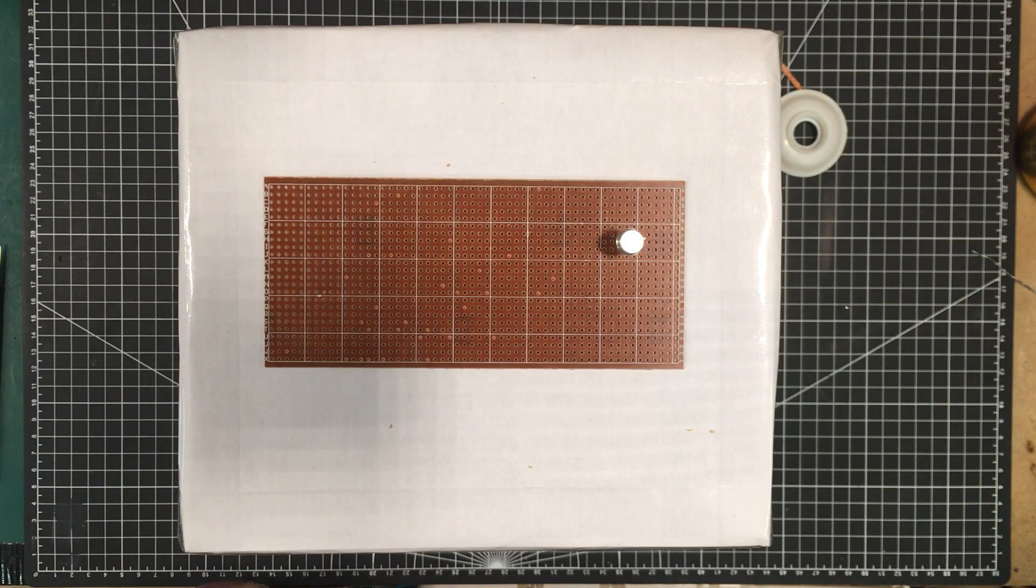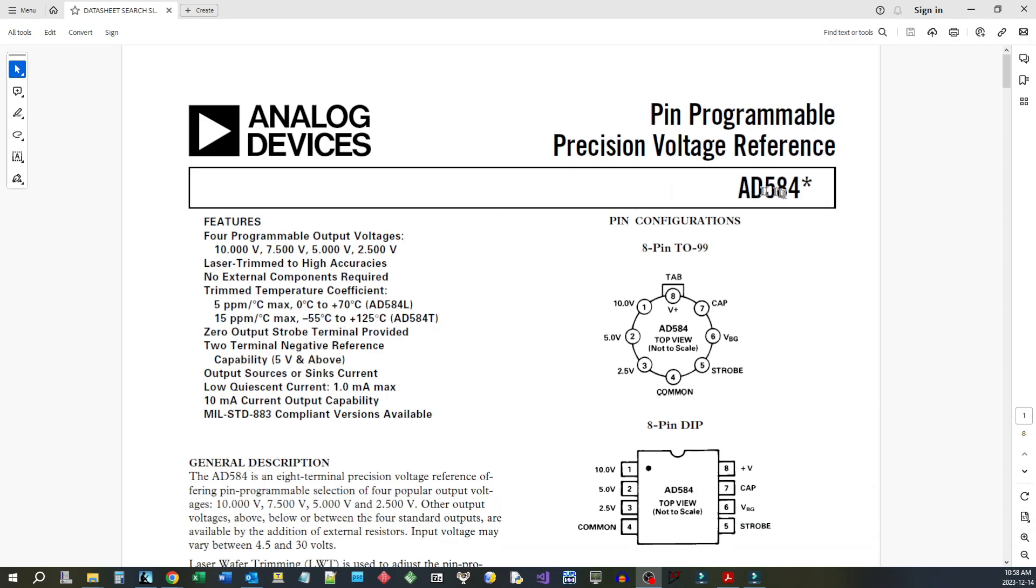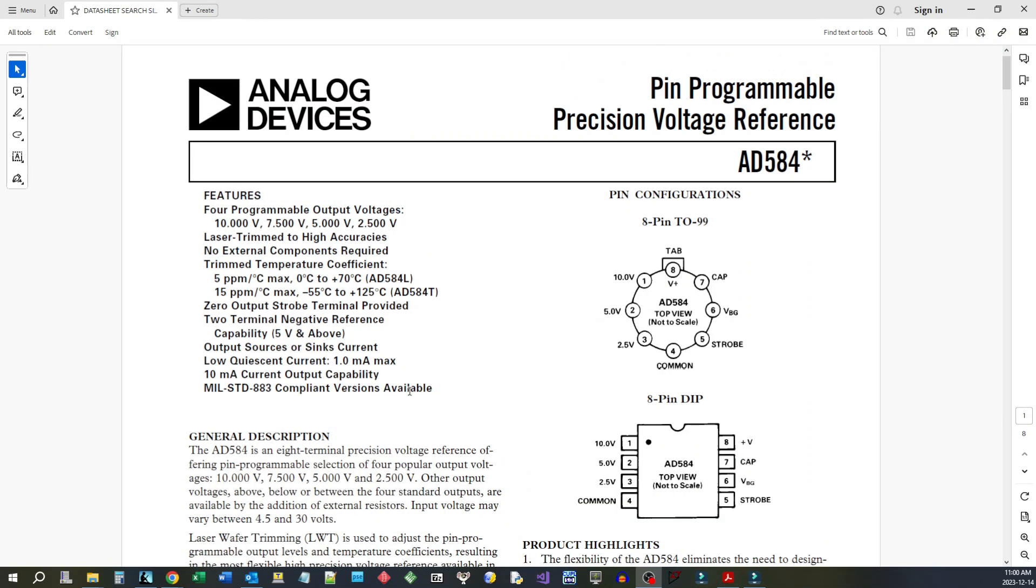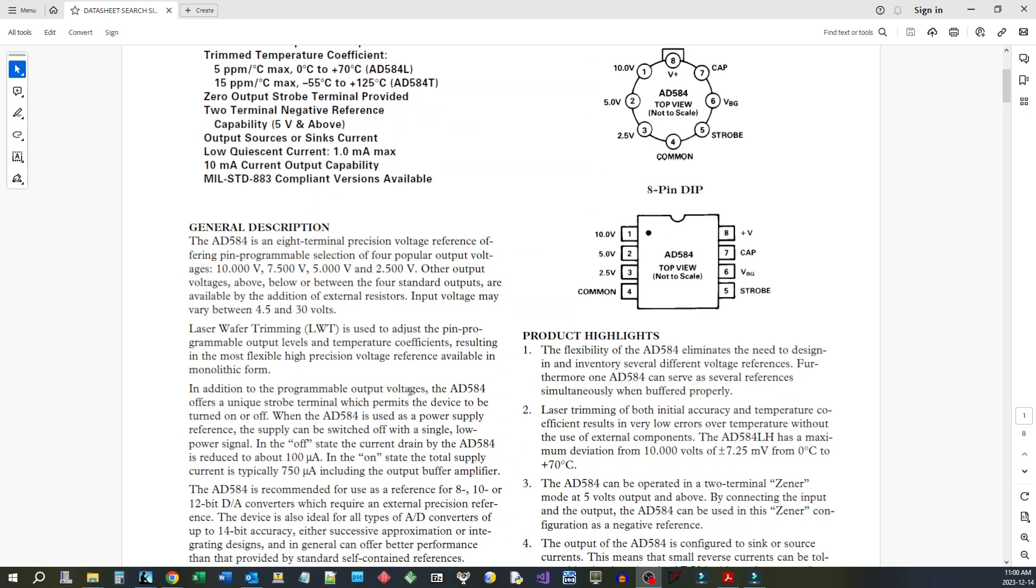Here is the device, the AD584 pin programmable precision voltage reference. It looks like you got four programmable voltages: 10 volts, 7.5, 5, and 2.5. These are driven to high accuracies, no external components required, quiescent current of one milliamp, 10 milliamp current output capability.